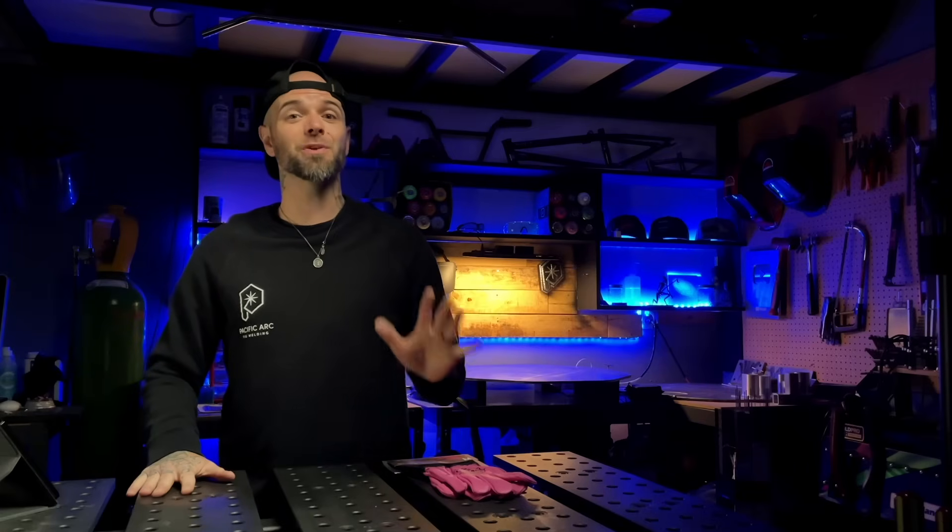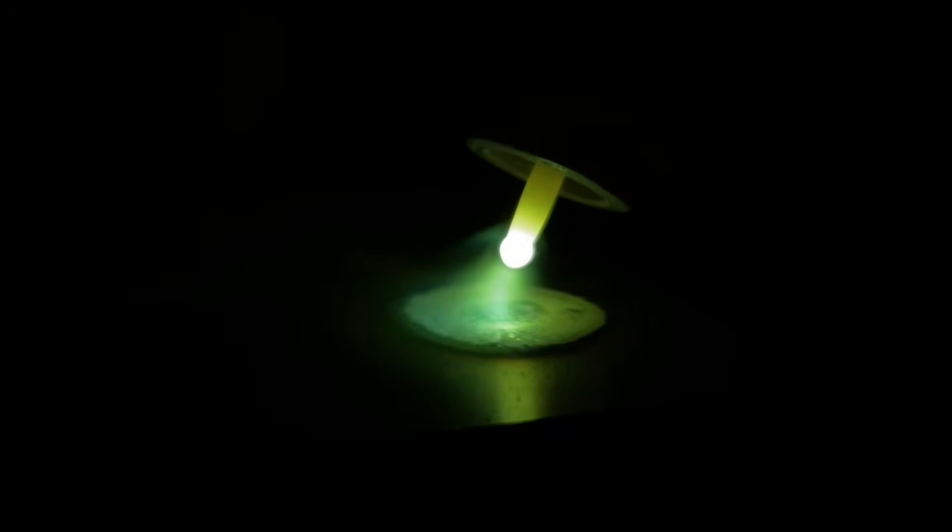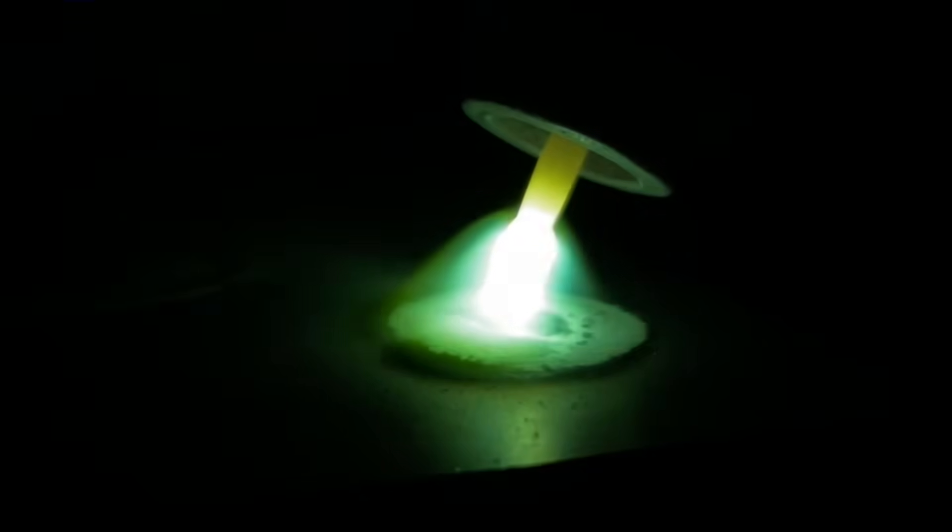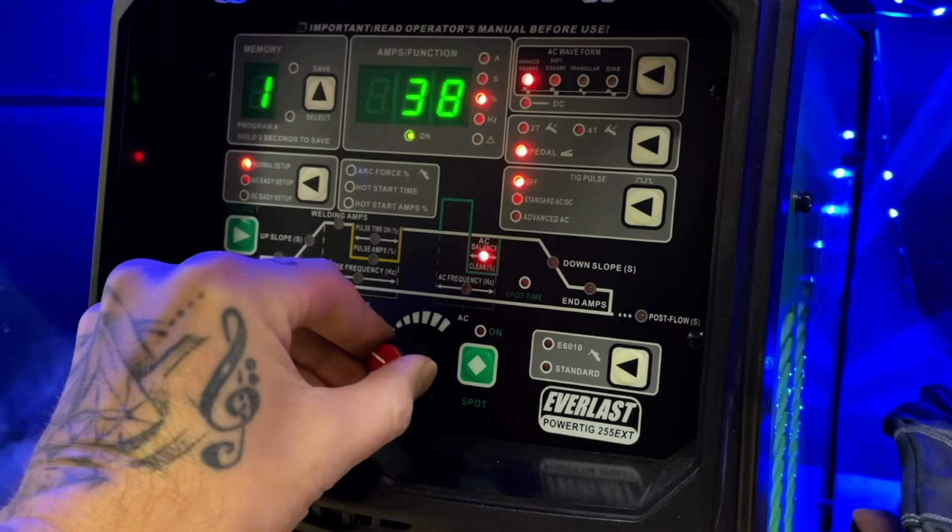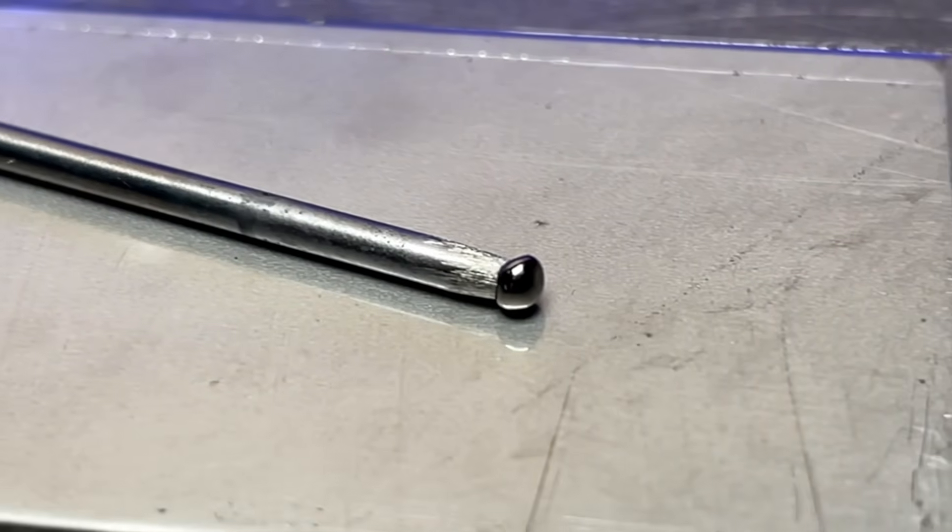So again, what do we not want? We do not want excessive balling. This can happen at higher amperage settings. Typically at this point, our balance is going to have essentially too much positive side to the AC cycle. And like I said, we're welding at higher amperage.